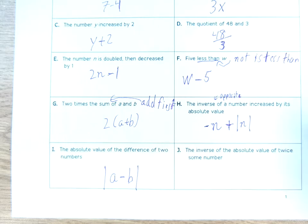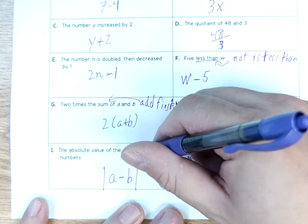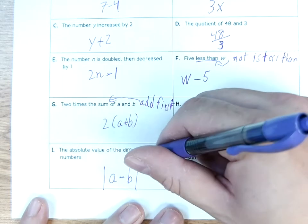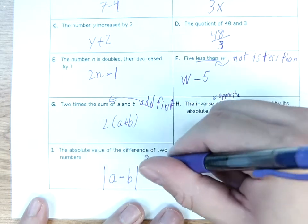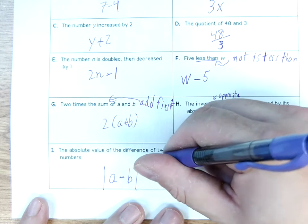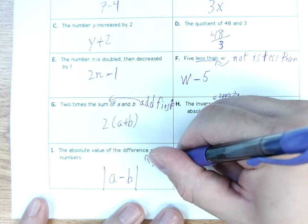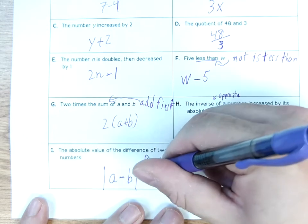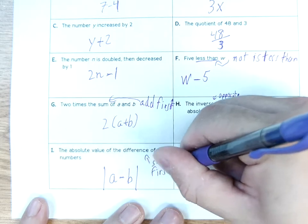This would be how far the numbers are apart on a number line — the distance between two numbers. For example, seven and four are three apart. Whether you look at the four first or the seven first, it's still three apart. So this means subtract first and then do the absolute value.